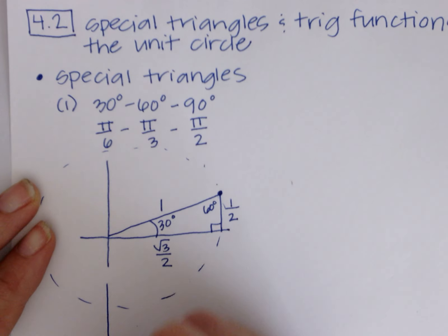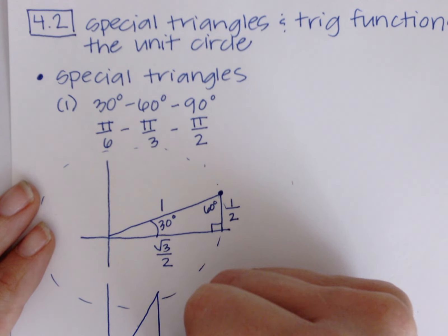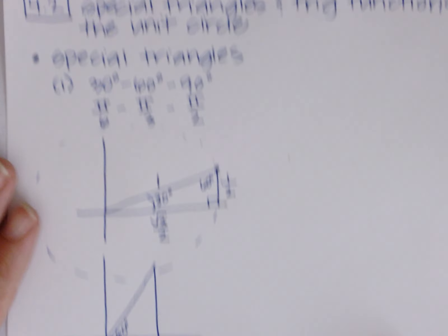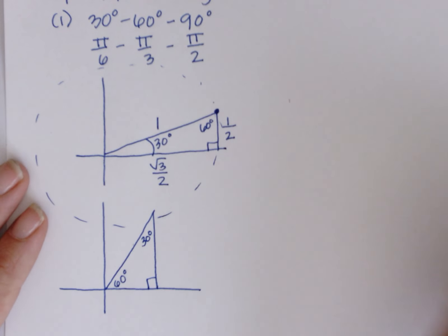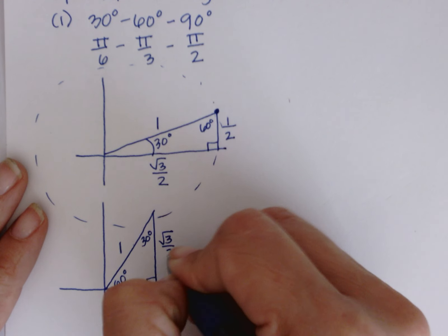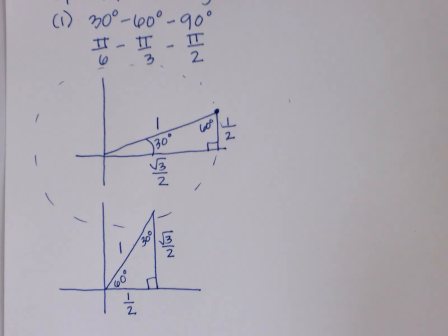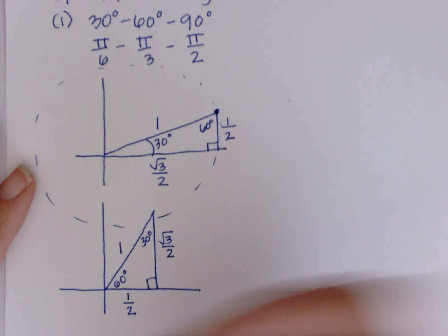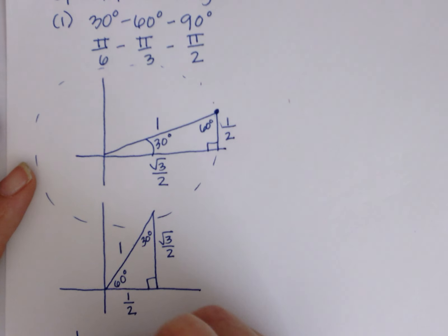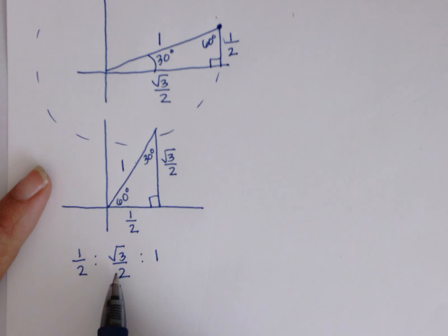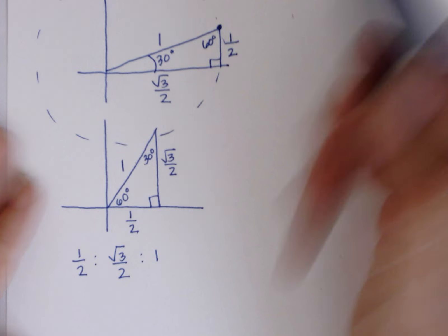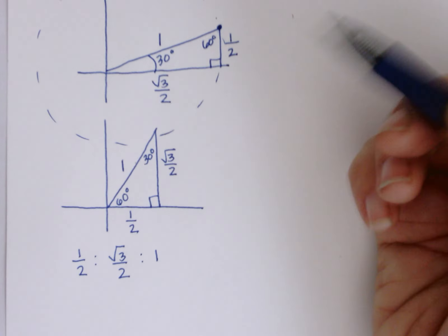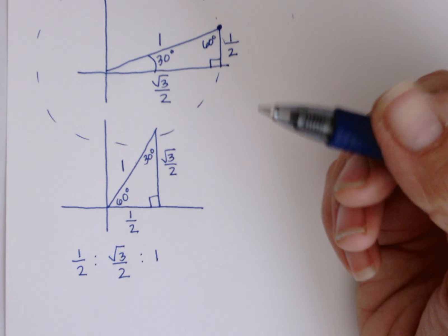The other triangle from a 30-60-90 is when the 60-degree angle is at the x-axis, making the angle up top 30 degrees. Hypotenuse is still 1. Opposite 60 is root 3 over 2, and opposite 30 is one half. You need to memorize these ratios: smallest side is one half, medium side is root 3 over 2, and the largest side (hypotenuse) is always 1. A memory trick: 60 degrees — 3 times 2 is 6; 30 degrees — 1 plus 2 is 3.